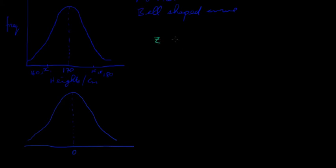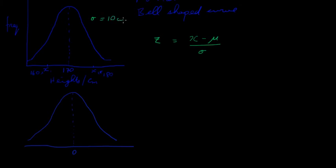The z value formula is: z = (x − mean) / standard deviation. For this particular set of heights, the standard deviation is 10 centimeters and the mean is 170 centimeters.